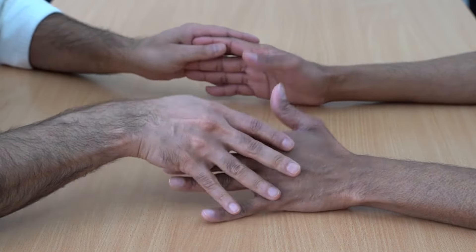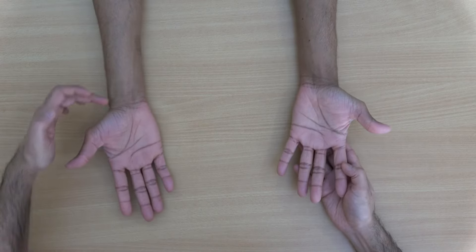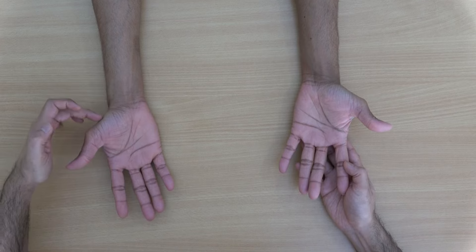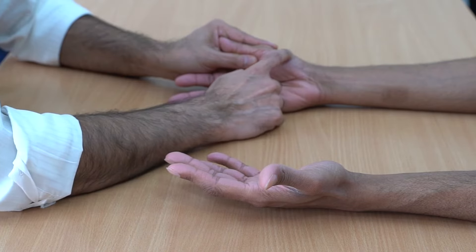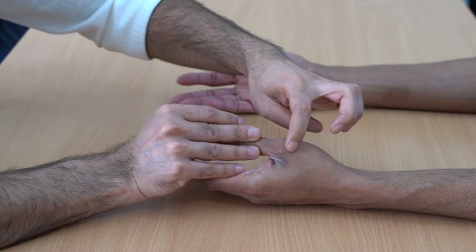We also look for any scars around the base of the thumb from previous procedures. These can run on the volar aspect and can also run on the dorsal aspect.